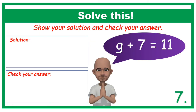Number 7. Solve this. G plus 7 equals 11. Show your solution and check your answer.